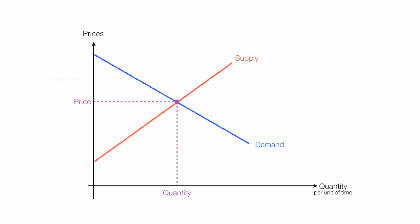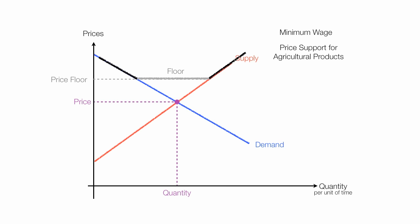A price floor, on the other hand, is a price set above market price. To help you understand price floors, think of a house and the floor of a house. A good example of a price floor is minimum wage or some type of price support for agricultural products.